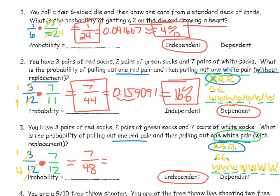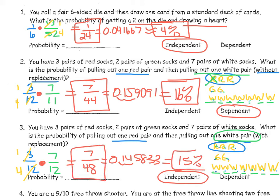The probability of this happening is 7 out of 48, which equals approximately 0.1458 — the same as a 15% chance.